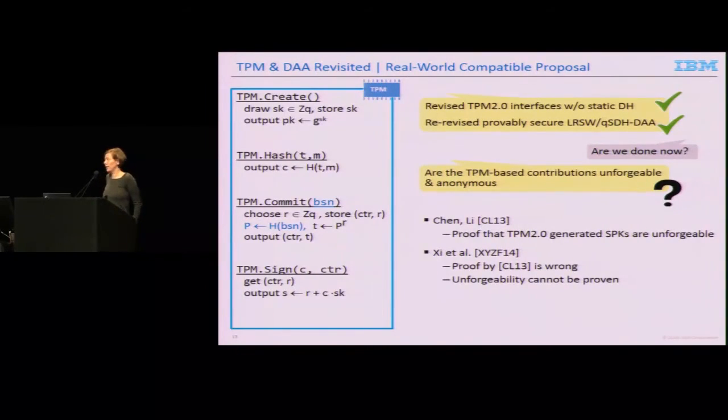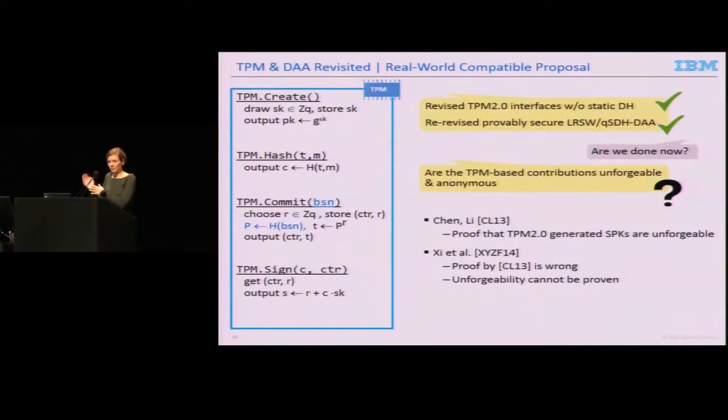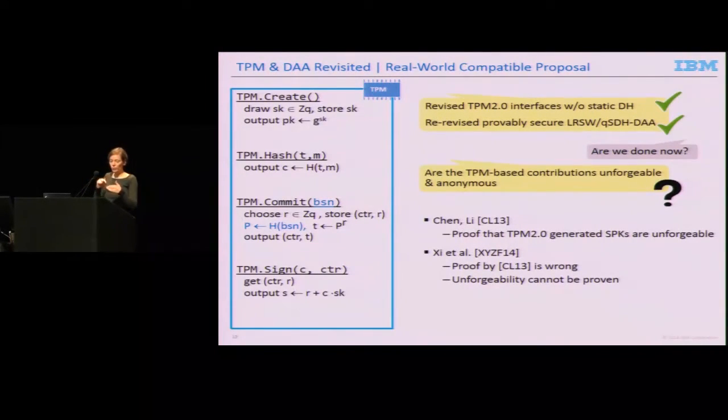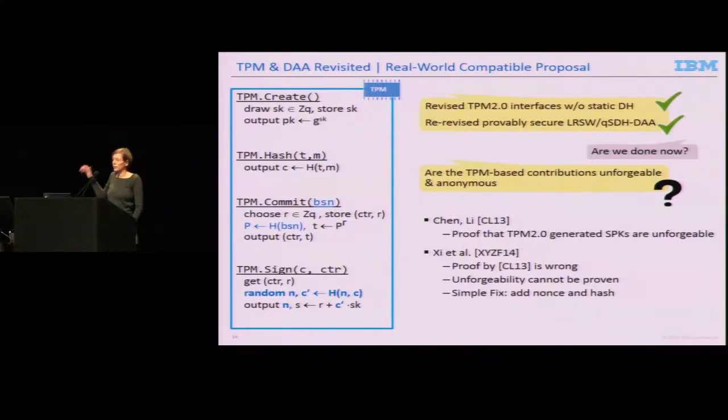Then there was bad news again. The interfaces, in particular the initial interfaces standardized in TPM 2.0, do not allow such proofs. You cannot prove the TPM-based SPKs are unforgeable. The problem is that to do so, you have to program the random oracle. In particular, you can only simulate the sign interface if you program the random oracle for that hash value to a special point. To do so, you have to know which hash is used in that final command. It's not possible because the host has full access to all the different APIs and can make many hash calls using the same T value. You have no clue when to program the random oracle so you can't simulate these interfaces. The good thing is the fix proposed by Xie et al. is very simple: just add a nonce in the hash on the sign interface and hash the hash again together with the nonce. Then in the security proof you can make sure you can program the random oracle in the moment when the signature should be created.